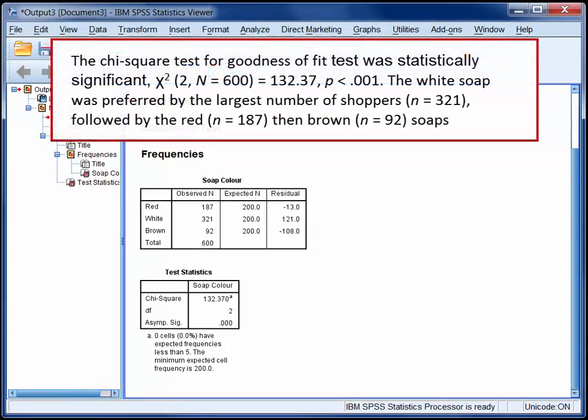So we could write up our findings like this: The chi-square test for goodness of fit was statistically significant. The white soap was preferred by the largest number of shoppers, followed by the red and brown soaps.